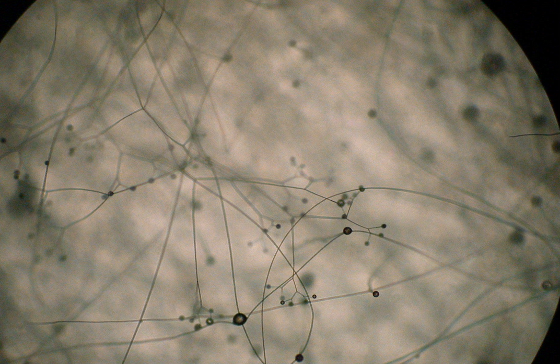Zoopagaceae: Acaulopage 27 species, haustorial parasites of amoeba. Cystopage 7 species, haustorial parasites of amoebae and nematodes. Stylopage 18 species, predaceous on amoebae and nematodes. Zoopage 11 species, haustorial parasite of amoebae and testaceous rhizopods. Zoophagus 5 species, ectoparasites of loricate rotifers and nematodes.